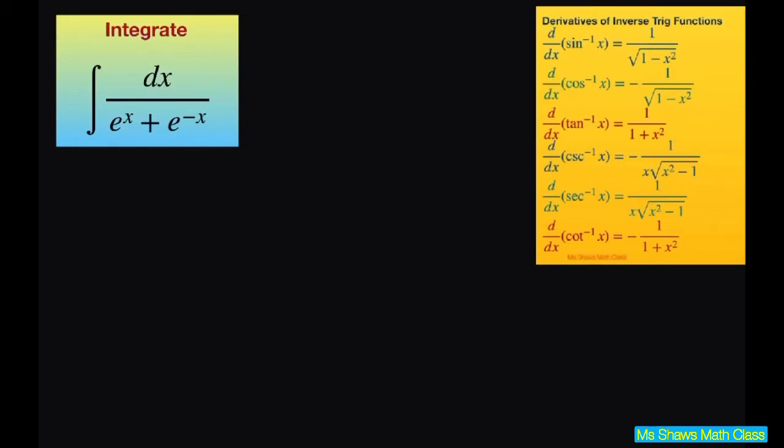So what we want to do is first rewrite our integral as 1 divided by e to the power of x plus e to the power of negative x. What we want to do is multiply the numerator and the denominator by e to the x power.